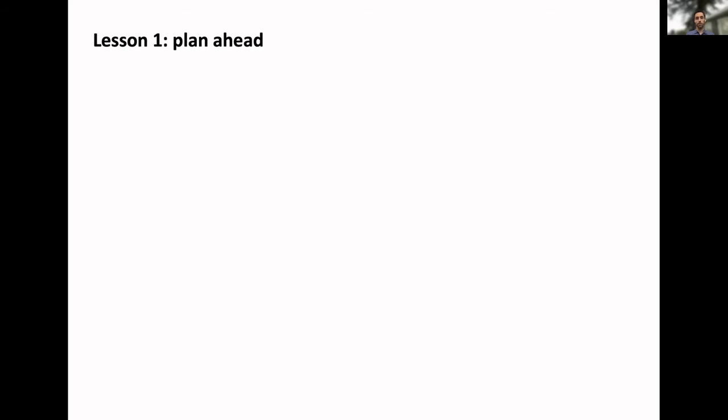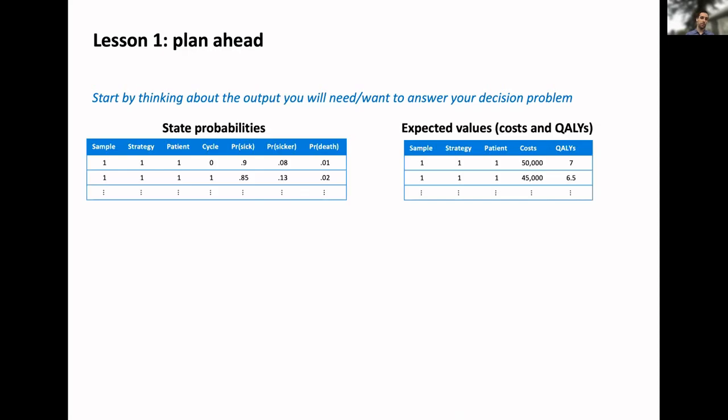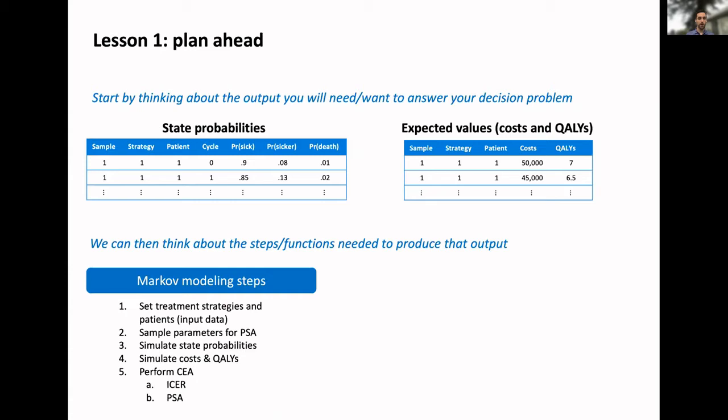One thing I've really learned is that you should plan ahead when building a model. Often you want to jump into coding, but if you think about what you actually want to achieve, you can do things in a more efficient and cleaner manner. For example, we might think about the output we need. In our example, two things we'll need are state probabilities, the probability of being in each of the three states at a given model cycle. Since we're in a cost-effectiveness framework, we'll also want to compute costs and qualities.